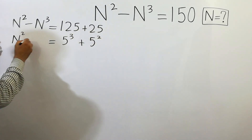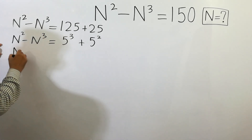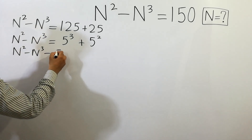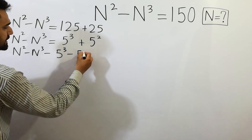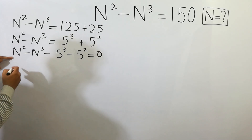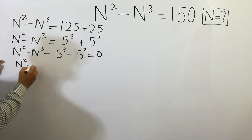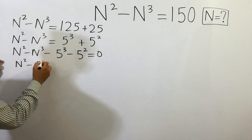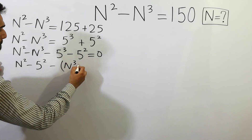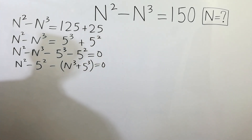So we have n squared minus n cubed. Next step: n squared minus n cubed minus 5 cubed minus 5 squared equals to 0. And we can write this as n squared minus 5 squared minus bracket n cubed plus 5 cubed equals to 0.